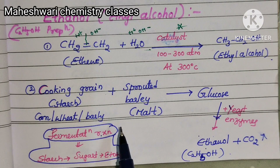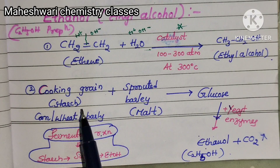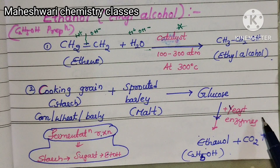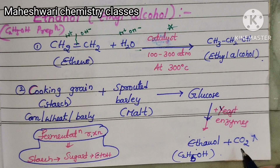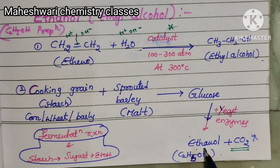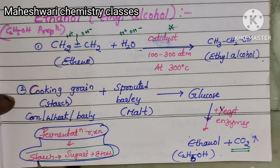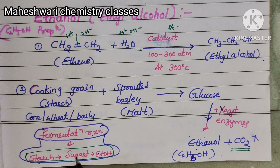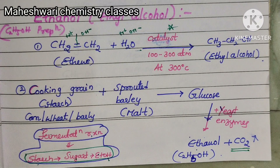Another method is fermentation: cooking grain — starch, corn, wheat, or sprouted barley (malt) — reacts to form glucose. In the presence of yeast or enzyme, this glucose converts to ethanol and carbon dioxide gas. This reaction is called fermentation. The steps are: starch converts to sugar, then sugar converts to ethanol.